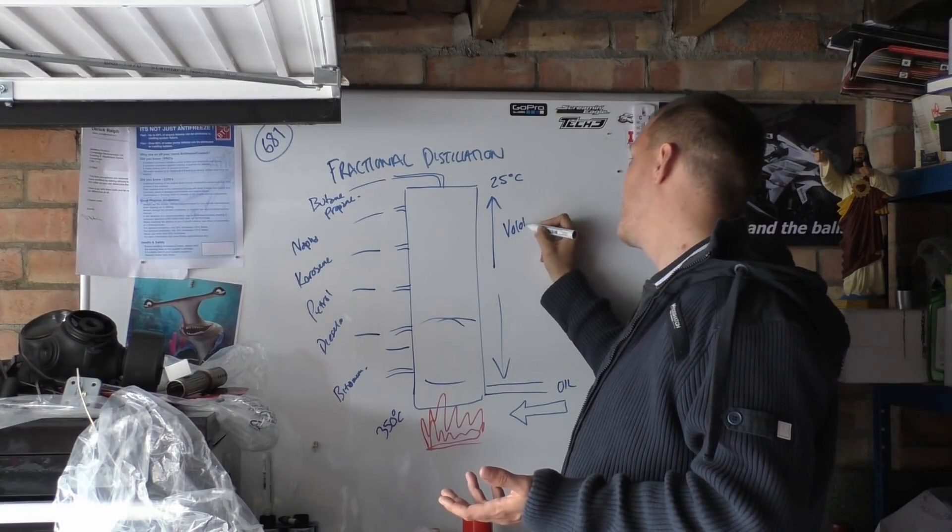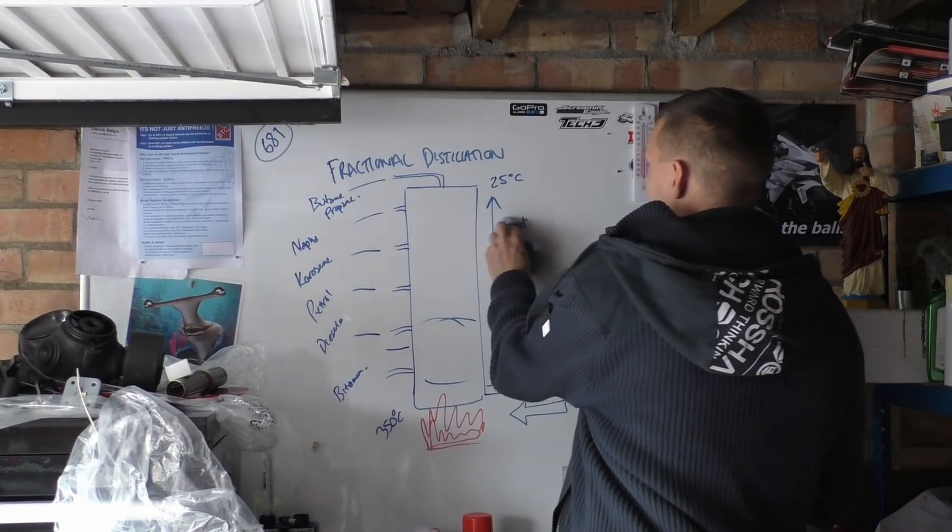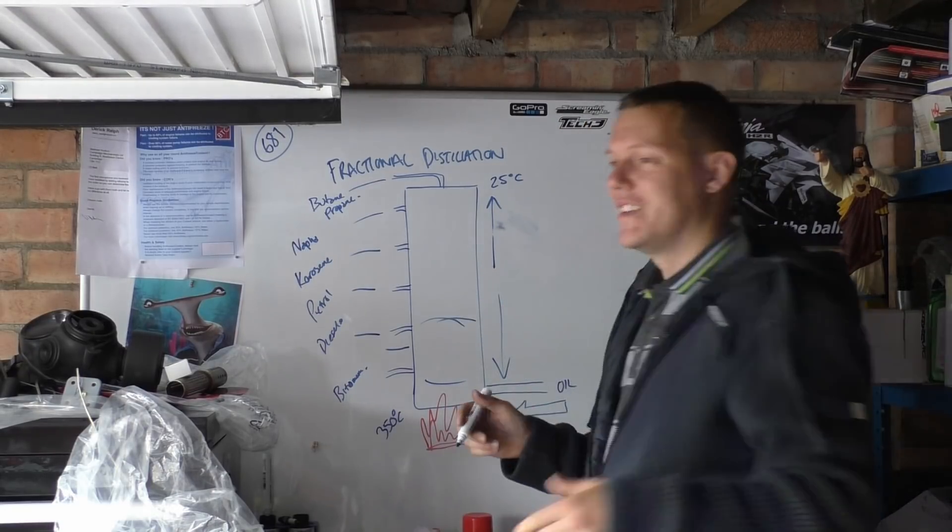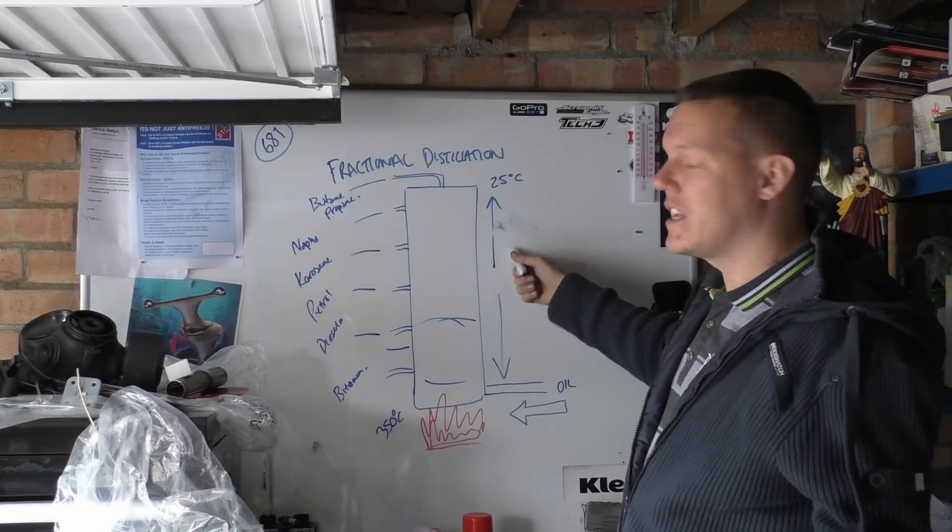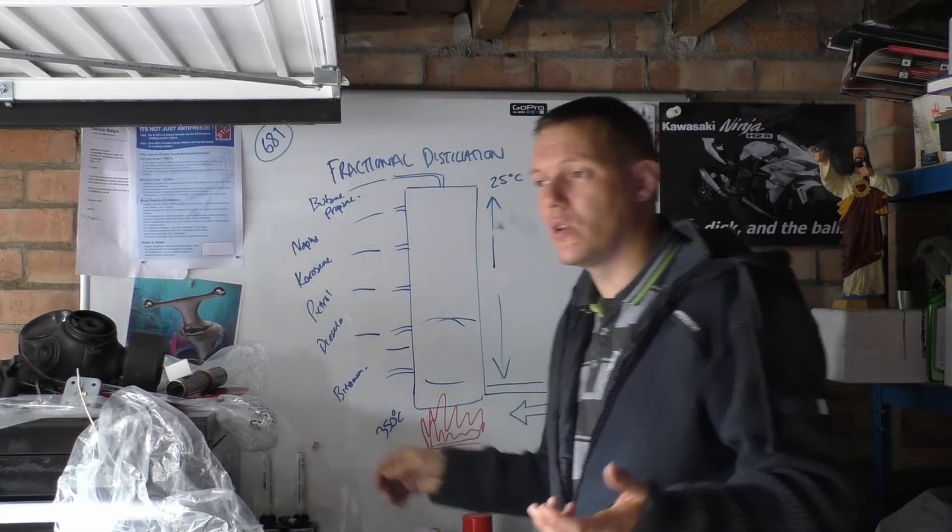These are your volatiles towards the top and these are your less volatile compounds and molecules that go to the bottom.